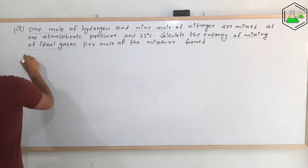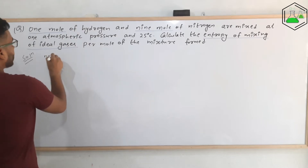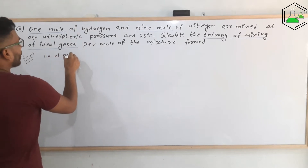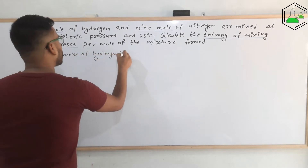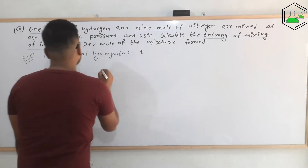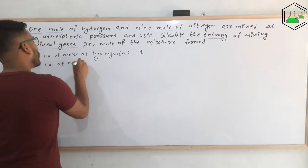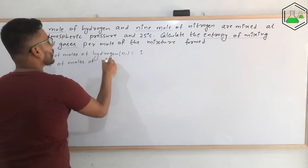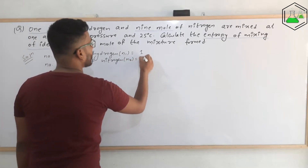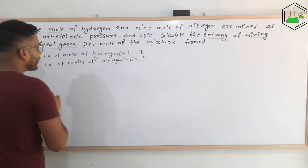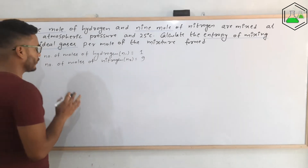First, let's write what is given. Number of moles of hydrogen, N₁, is given to be 1. Similarly, number of moles of nitrogen, N₂, is given to be 9. We just need these two data points to find the value of entropy of mixing of ideal gases.